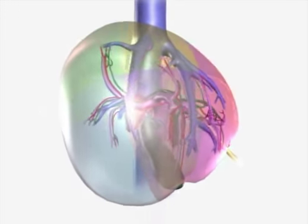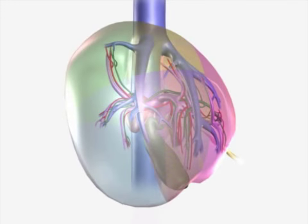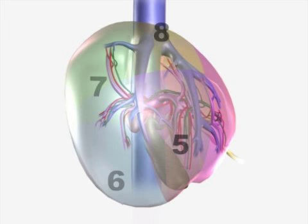The right liver is composed of segments 5, 6, 7, and 8. The right liver is split in the plane of the right hepatic vein into an anterior and posterior sector.